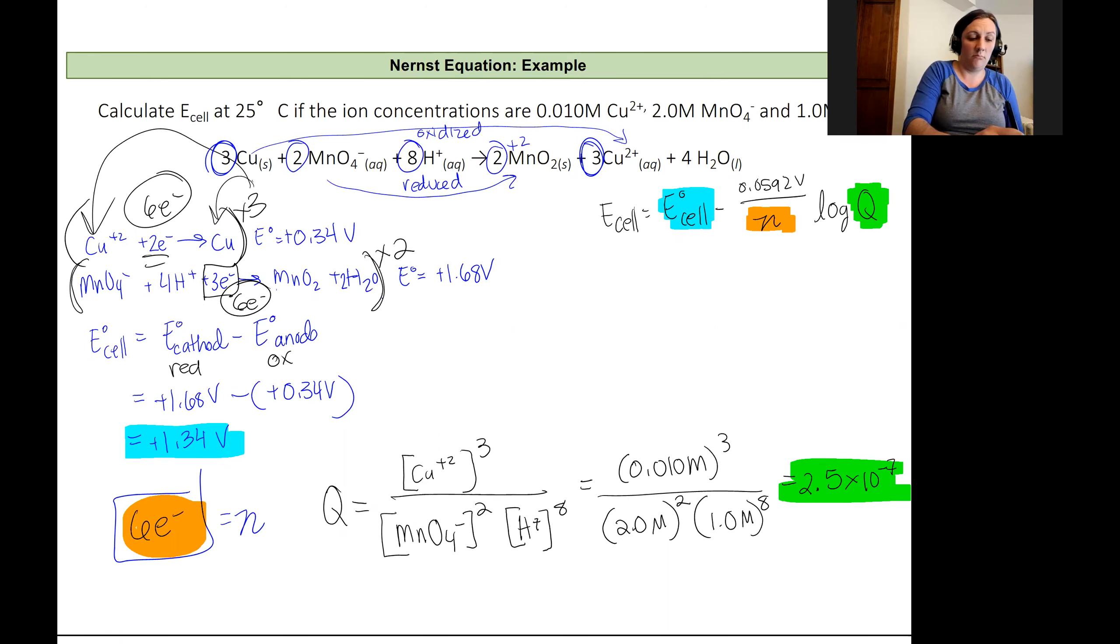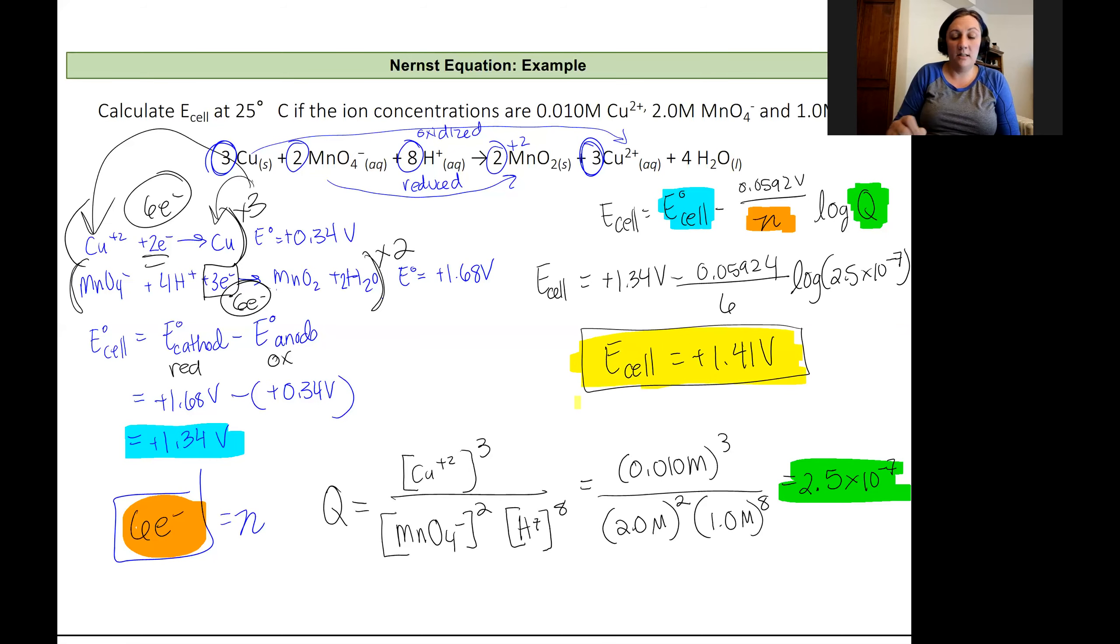Coming back to the Nernst equation, I'm just going to plug in the three values I've calculated. The cell potential at nonstandard conditions will be equal to my standard cell potential of plus 1.34 volts minus 0.0592 volts divided by my six electrons times log of 2.5 times 10 to the negative seven. When I do that, I'm going to get a value of my cell potential being positive 1.41 volts. That is my end goal for this calculation right there.